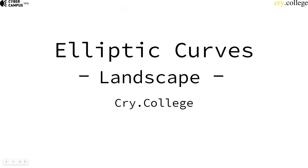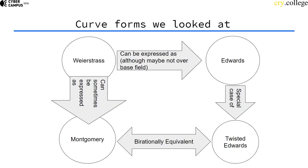Since we went over different kinds of elliptic curves, I want to plot a small elliptic curve landscape. In the beginning we have looked at Weierstrass curves, the most general form, and they can be expressed as Edwards curves.